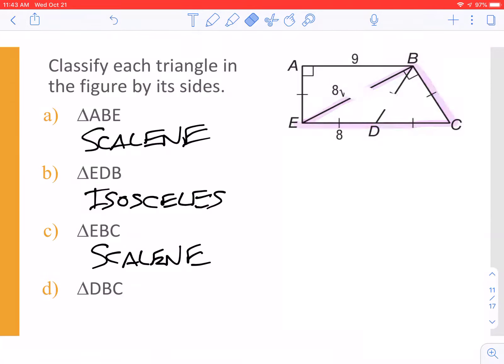And, last but not least, we have D, B, C. We can see that they all have one tick mark. So that will be an equilateral.